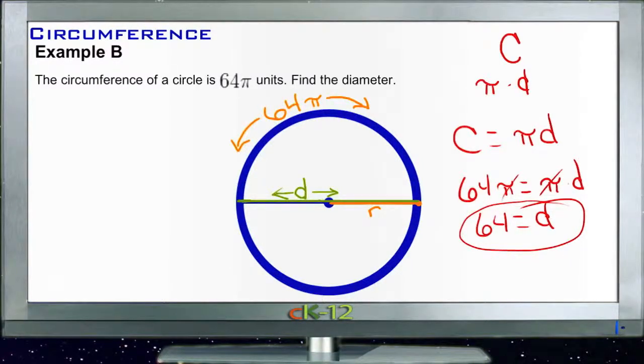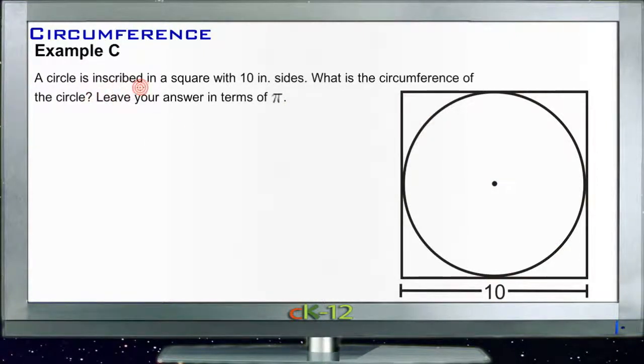Okay, example C. Example C asks us to find the circumference of a circle that's inscribed in a square that has 10 inch sides, and we can just leave our answer in terms of pi, it says.